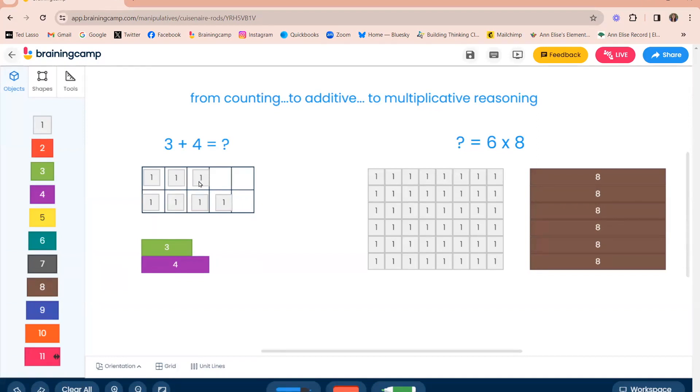Another student may have started with a three and then counted on four more. So they're keeping this as one group in their head and counting on the second addend. Another student might say, well I began with a four and I counted on the three. And we might ask them, well why did you begin to start with the four since it comes second? And they can tell us that it's a bigger number and if I count on from the larger number even if it comes second, they understand the commutative property of addition, then they can get to their answer more efficiently. Now all of that is the counting phase of reasoning.